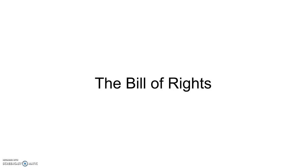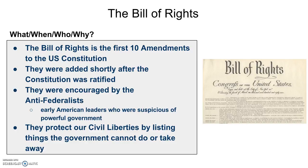The Bill of Rights is the first ten amendments to the Constitution, and they were added shortly after the Constitution was ratified. The people largely responsible for the idea of a Bill of Rights are the anti-Federalists — a political group of American leaders who were very suspicious of powerful government. They remembered how the government treated them as colonists under Great Britain's rule, and were nervous about giving the government too much power without establishing proper limits. So they insisted that a Bill of Rights be included that spelled out things our national government could not do to step on our liberties and freedoms.